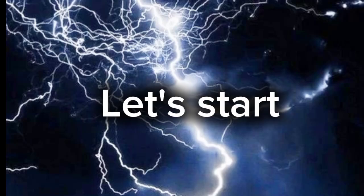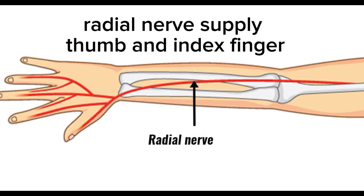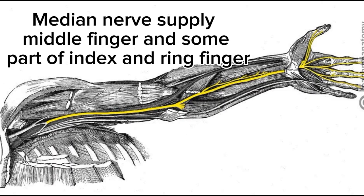The first nerve is the Radial nerve, which comes from the brachial plexus and supplies our thumb, index finger, and ring finger. The second nerve is the Medial nerve, also from the brachial plexus, supplying our middle finger, index finger, and ring finger.